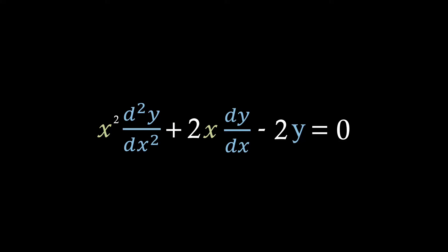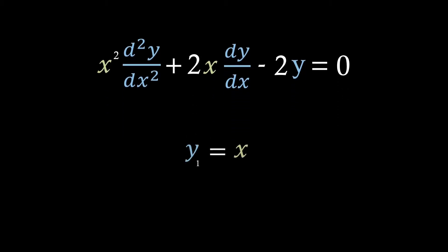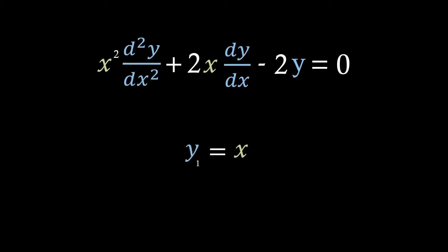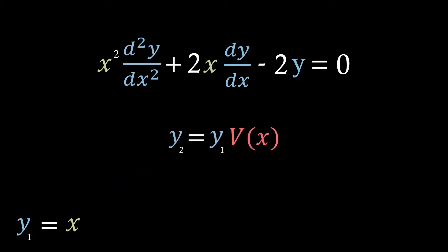Today we're going to look at something called the reduction of order method, where we have a differential equation like this and we already know a single solution. This may be by inspection or we might have been given it. For this second order ODE, say we know that one of the solutions is y1 equals x. It wouldn't be too bizarre for the second solution to be of the same form, so let's multiply y1 by a function of x — let's call that v.